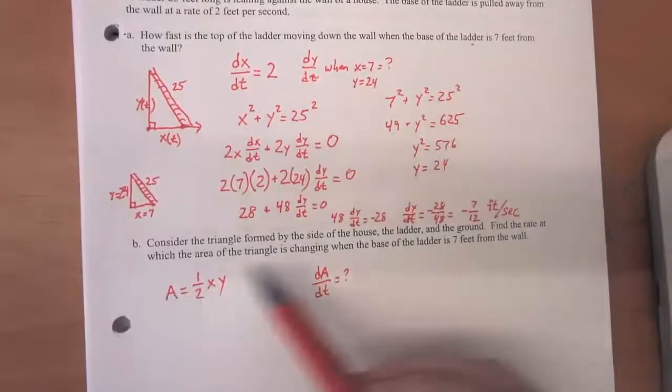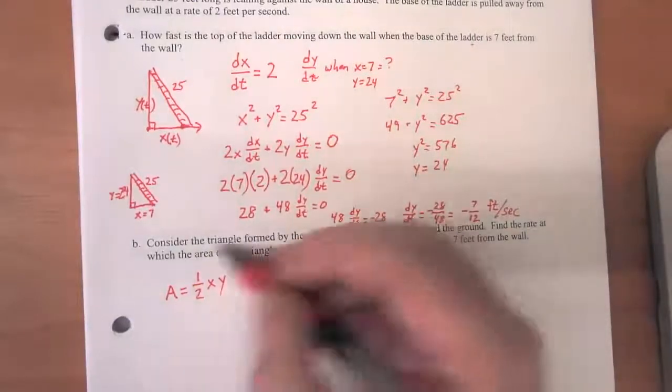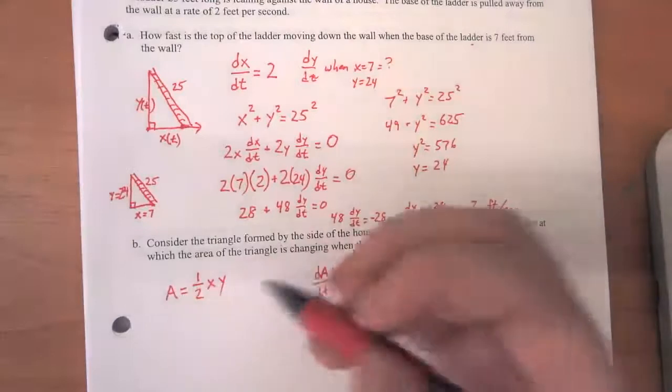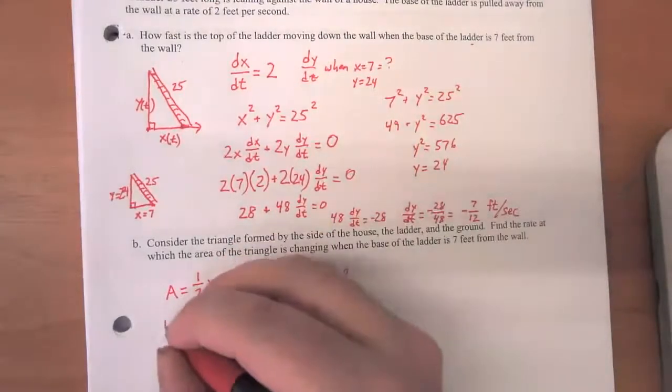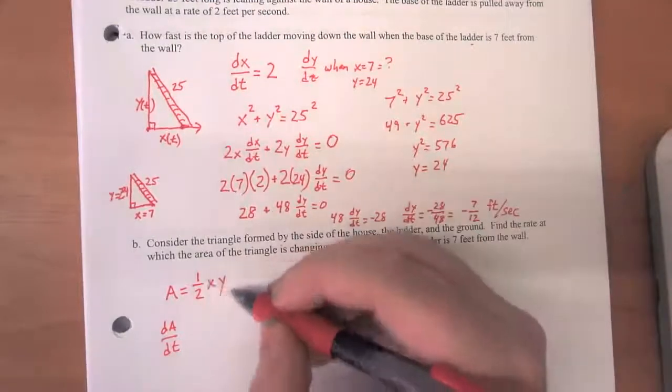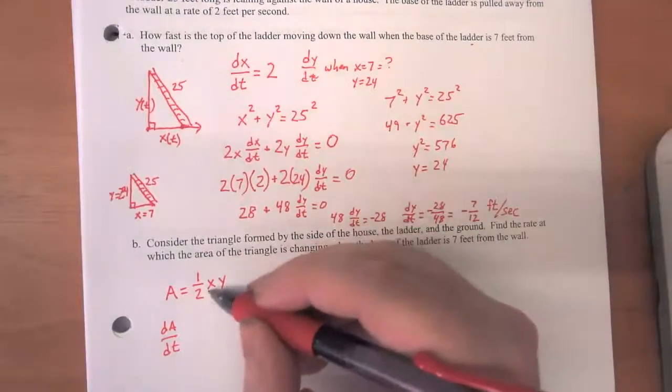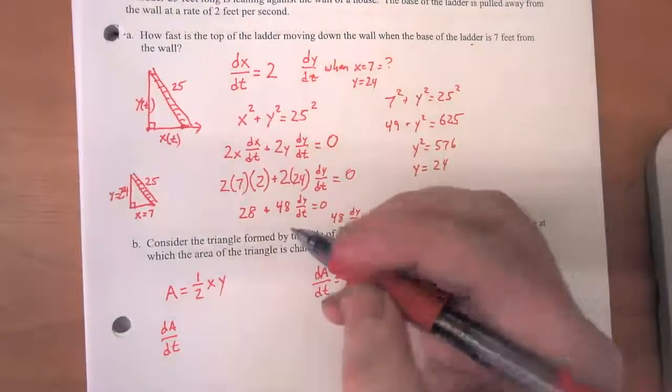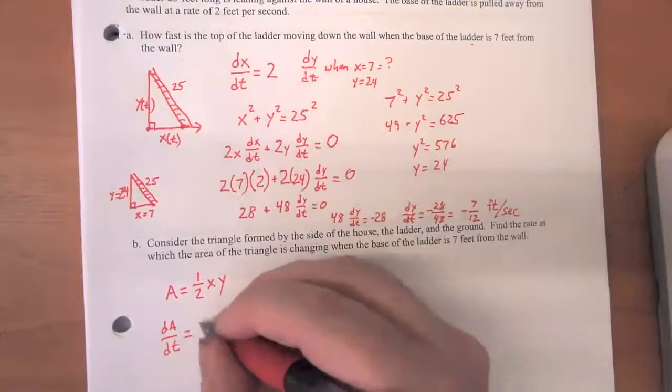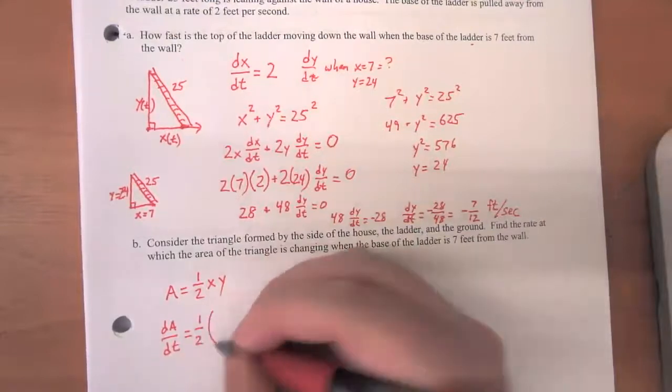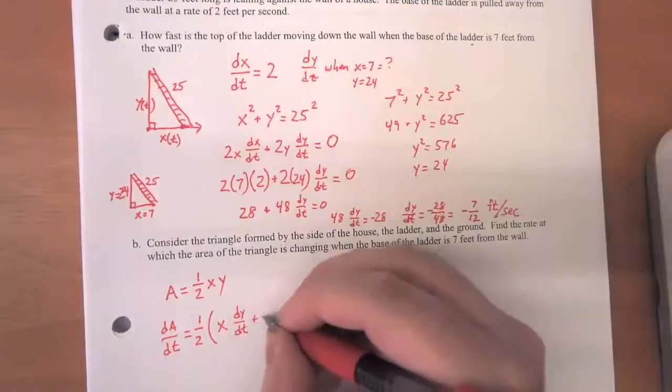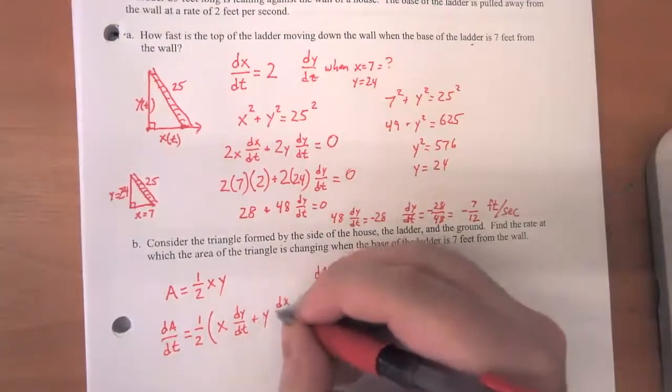And so to calculate what dA/dt is, we're just going to differentiate this with respect to time. So on this side, we've got dA/dt. And on the other side, we're going to need to use the product rule because we're multiplying x and y together, and these are both terms that vary with respect to time. And so the product rule tells us that this is x times dy/dt plus y times dx/dt.